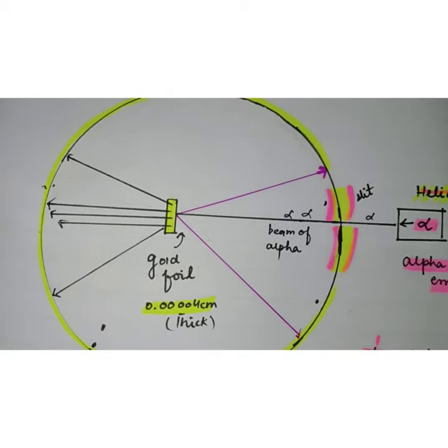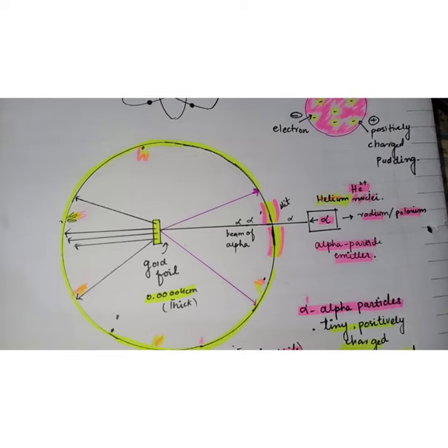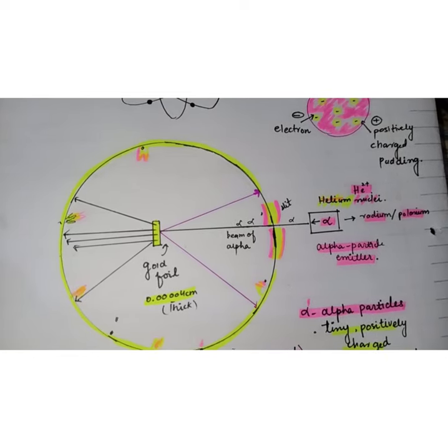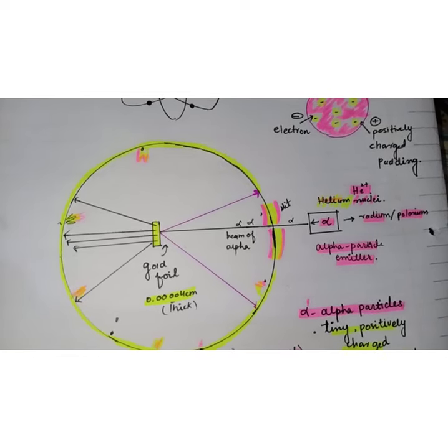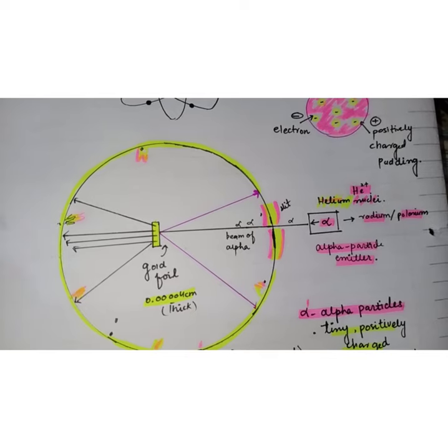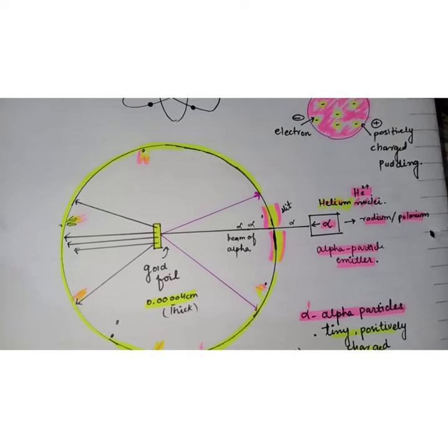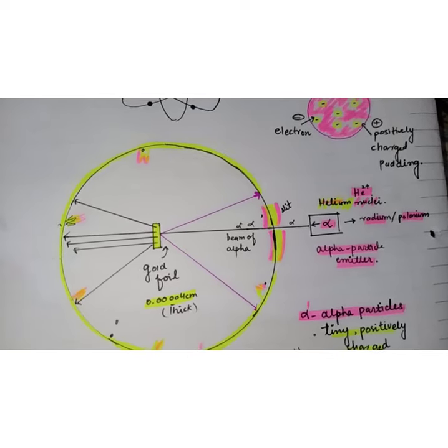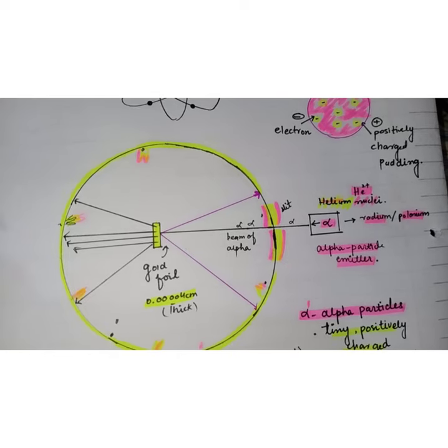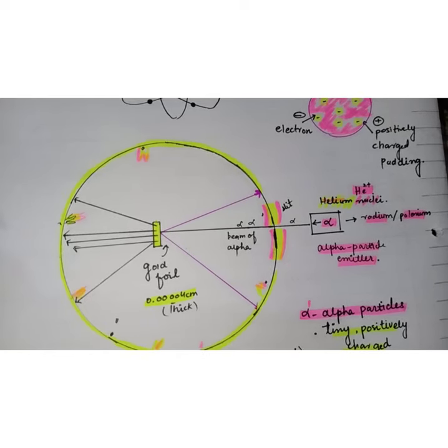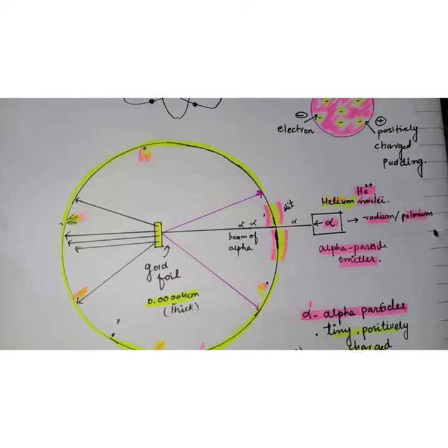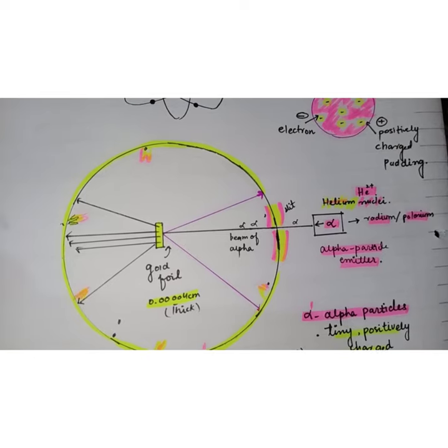He made some observations with his colleagues that almost all the particles passed through the foil undeflected. Out of 20,000 particles, only a few were deflected at fairly large angles, and a very few bounced back on hitting the gold foil at an angle of 180 degrees.